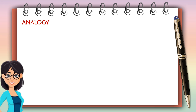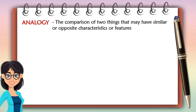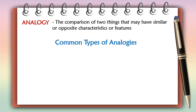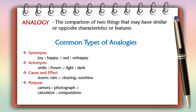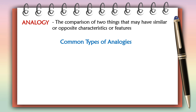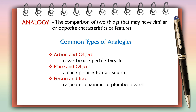Analogy is the comparison of two things that may have similar or opposite characteristics or features. We have common types of analogies: synonyms, antonyms, cause and effect, purpose, characteristics, degree, whole and part, action and object, place and object, and person and tool.